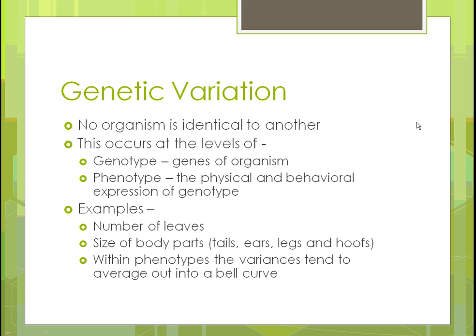Genetic variation is what helps drive natural selection. No two organisms are identical — just like humans, we're all different. This variation happens at two levels: the genotype, which are the genes of the organism, and the phenotype, which is the physical and behavioral expression of that genotype. Examples of variation in everyday life include the number of leaves on a tree — even two oak trees planted at the same time won't have the same number of leaves.